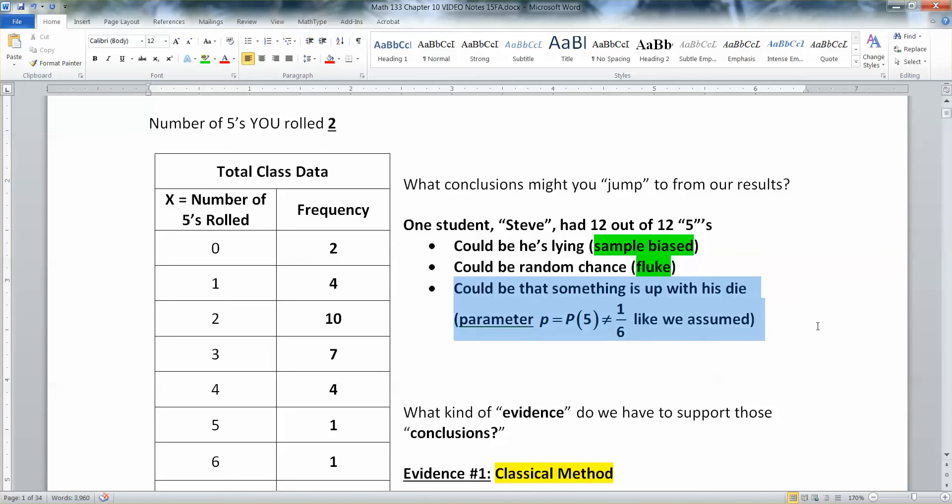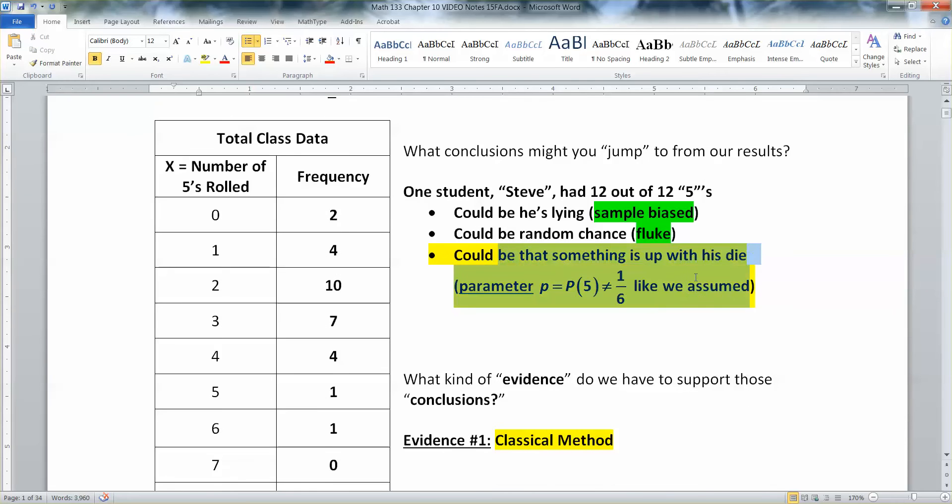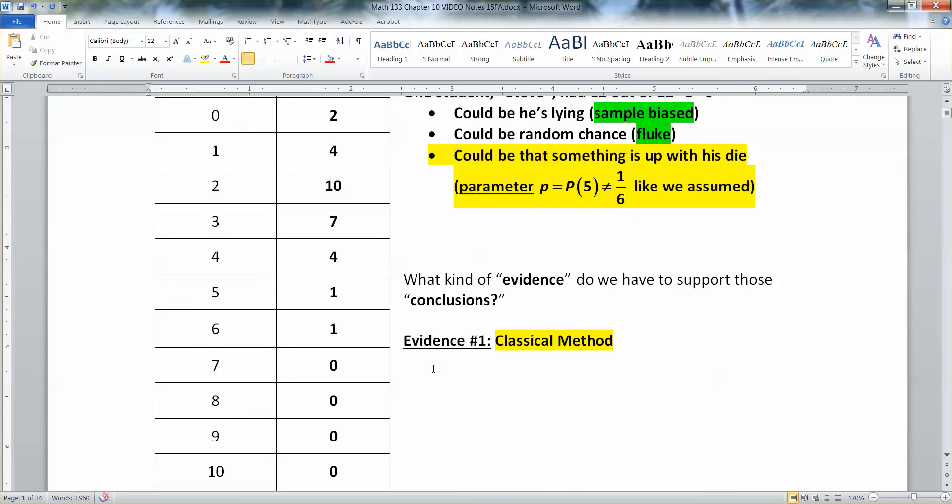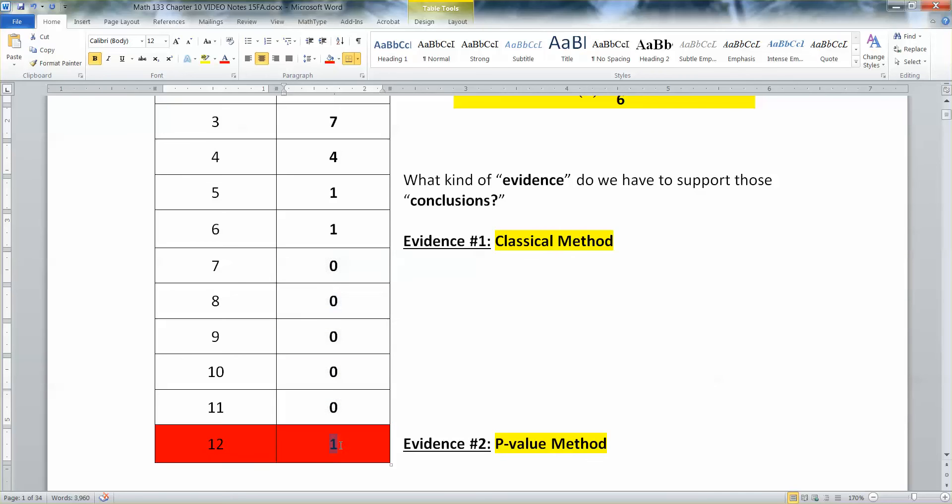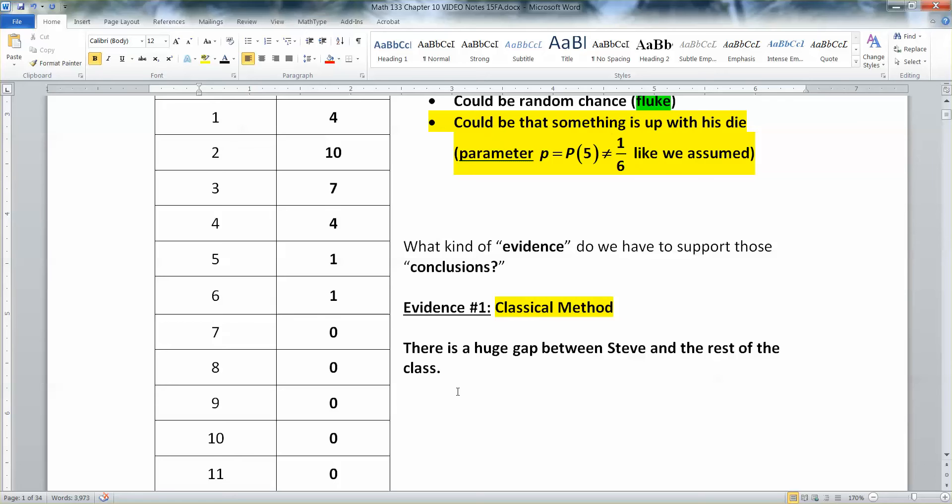So what kind of evidence do we have for this one? Because this is the one we're going to go with. And primarily because, not because the other two don't happen. They do. But there's nothing we can do with them. So what's the evidence we have that something is up with his die? So the first thing we have is that he is so far away from everybody else. When you look at this table, look at all these zeros. And there he is by himself. But Steve with 12 fives, something's going on there. And you can spot it because he is so far away from everybody else.